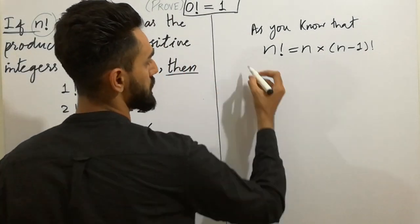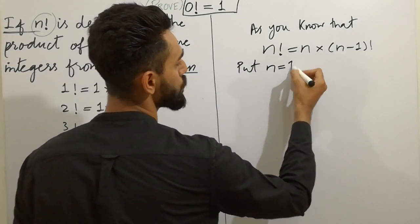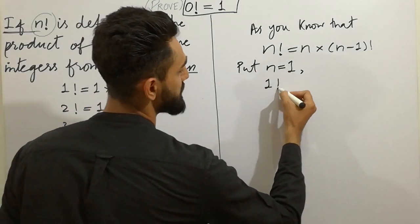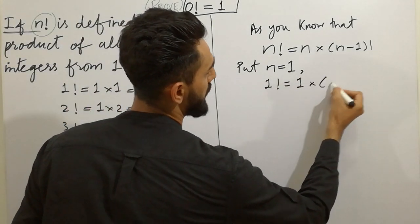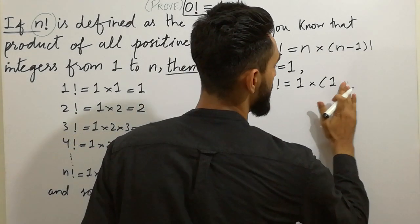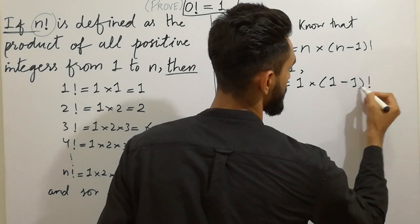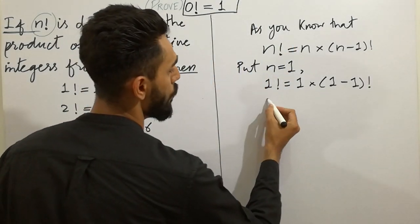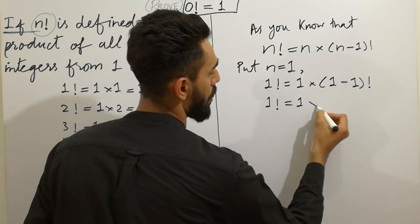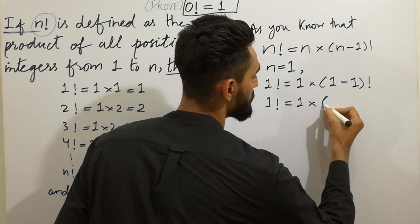Similarly, we can put here n is equal to 1, because 1-factorial will be 1. Similarly, here will be the value of minus 1-factorial — that is, 1-factorial will be 1 cross (1 minus 1), which gives us 0-factorial.